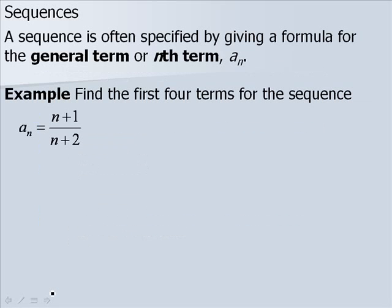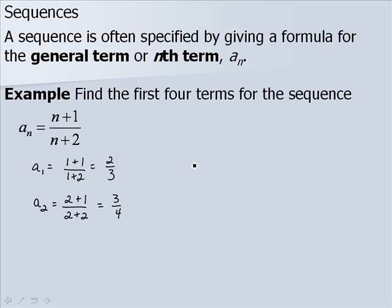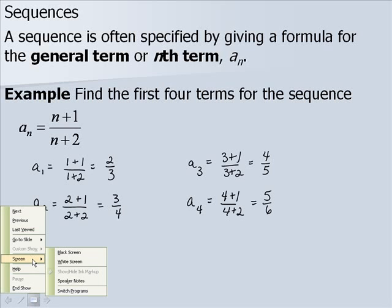Let's do an example. We want to find the first four terms for the sequence a sub n equals (n plus 1) over (n plus 2). So a1 equals 2 thirds, a2 equals 3 fourths, a3 equals 4 fifths, and a4 equals 5 sixths.